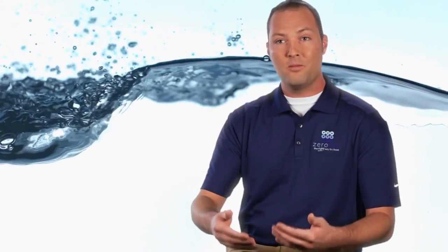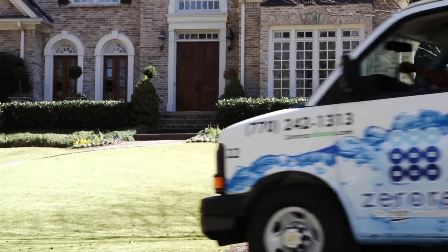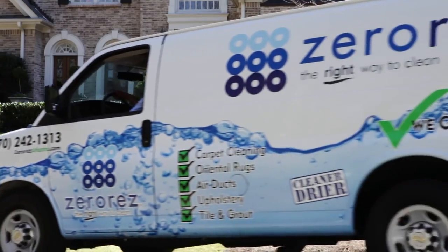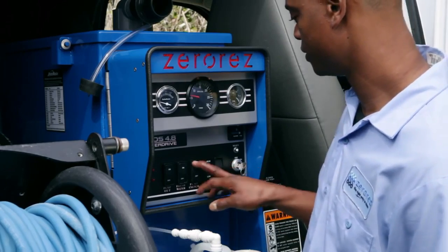If you don't get all the detergent out, it's going to sit there and begin to collect more dirt on the carpet. ZeroRes uses zero surfactants. We simply use empowered water that goes in, grabs the dirt out of the carpet fiber. That fluid acts as a detergent without chemicals, without residue.